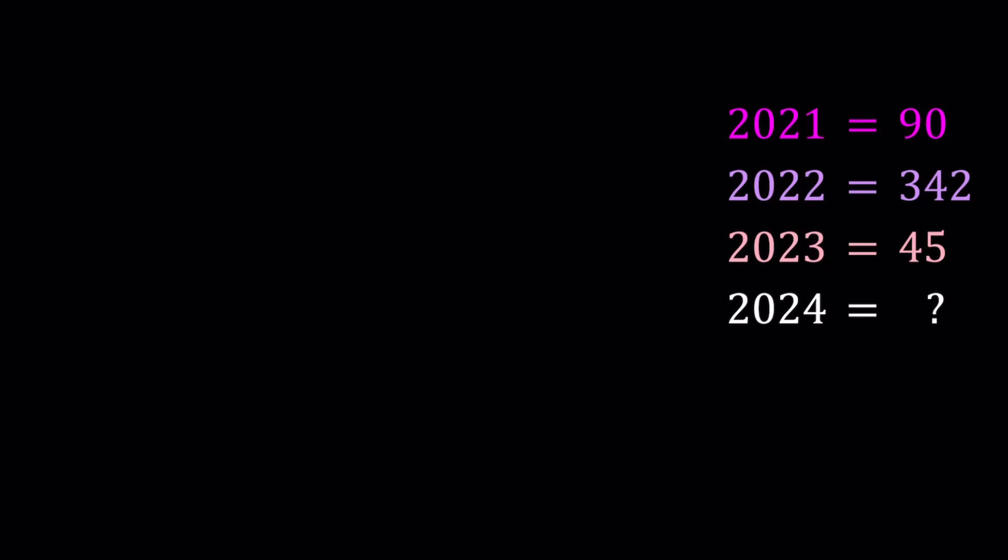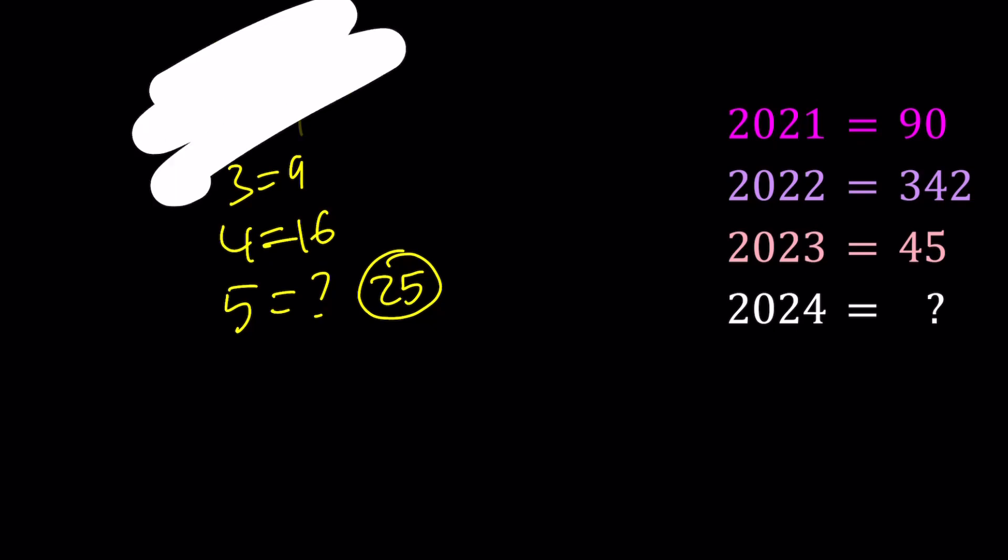For example, if I told you, you know, 1 is equal to 1, 2 is equal to 4, 3 is equal to 9, and 4 is equal to 16, this would pretty much mean take the number and square it. And obviously, if I ask you what 5 is going to be, then you could easily say 25 because 5 squared is 25. But our problem is not that straightforward because otherwise it will be boring, right? So something to think about.